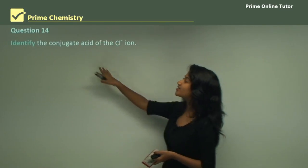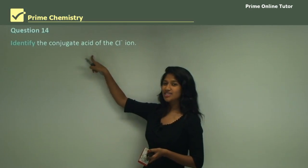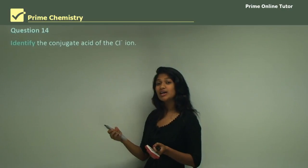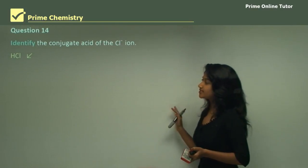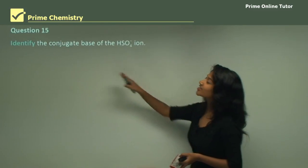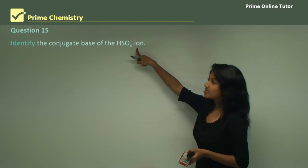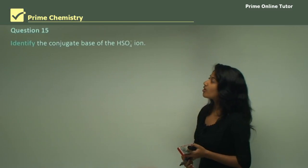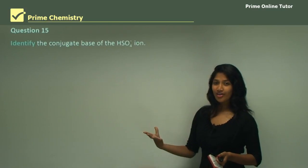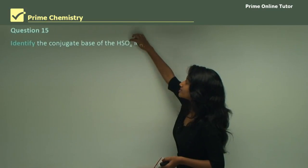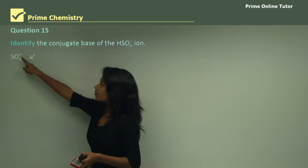Question 14 asks to identify the conjugate acid of the chloride ion — something that has an extra hydrogen. So the answer is hydrochloric acid, HCl. Question 15 asks to identify the conjugate base of the hydrogen sulfate ion. The conjugate base loses a hydrogen, so it becomes the sulfate ion. Remember to subtract a charge when losing a hydrogen — so you get sulfate ion with a 2-minus charge.